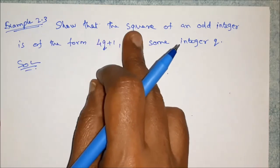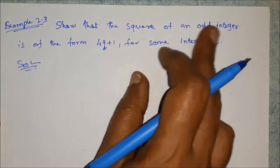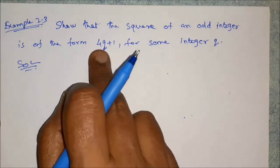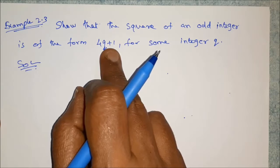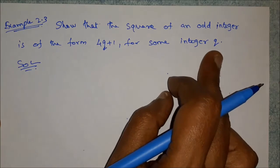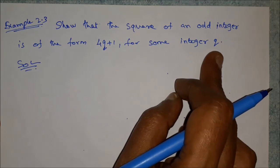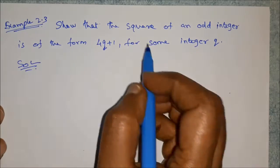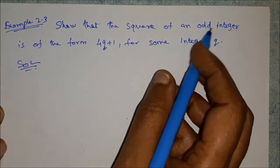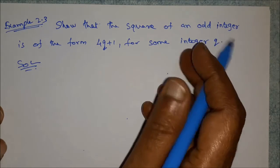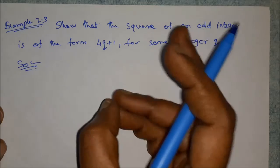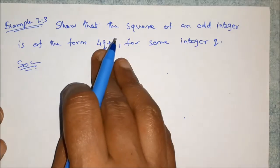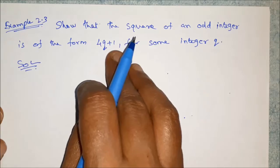Show that the square of an odd integer is of the form 4Q plus 1 for some integer Q. The square of odd numbers — odd numbers are 1, 3, 5, 7 — is of the form 4Q plus 1.